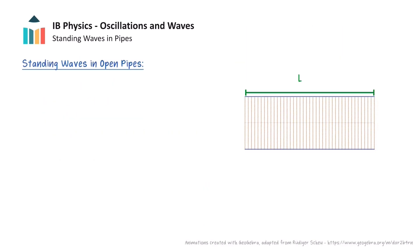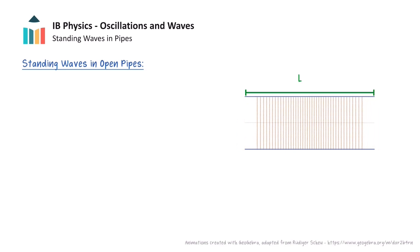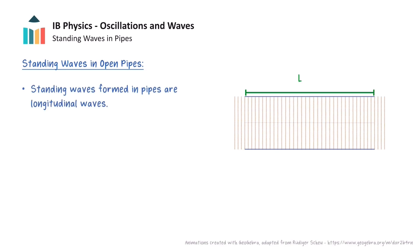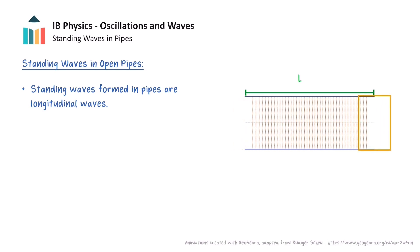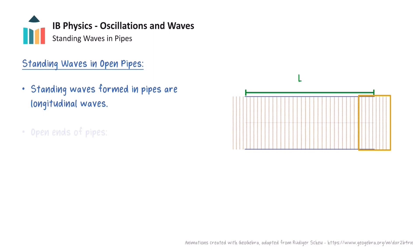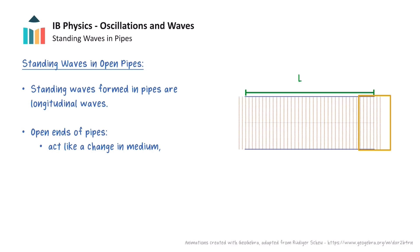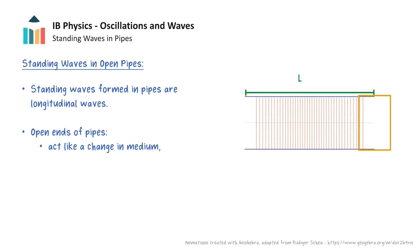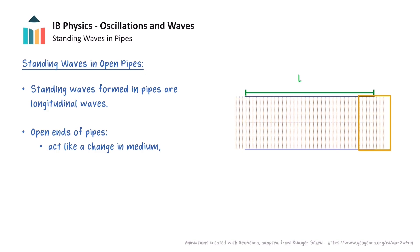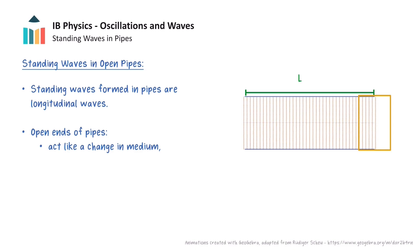We will first consider a pipe of length L which is open on both ends, where the orange dots represent air particles in the pipe. In contrast to strings, the standing waves formed in pipes are longitudinal waves. When the wave reaches the open end of the pipe, it is partially reflected back, because the open end acts like a change in medium, where the air inside the pipe is more restricted in movement compared to the air outside, which is exposed to the atmosphere. This reflected wave superposes with the incident wave travelling down the pipe, leading to the formation of standing waves.